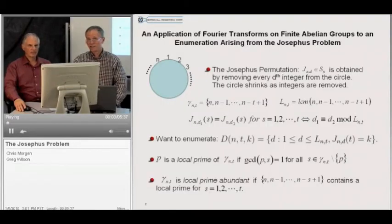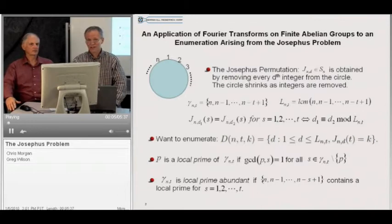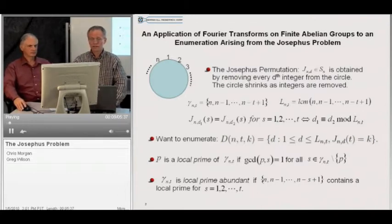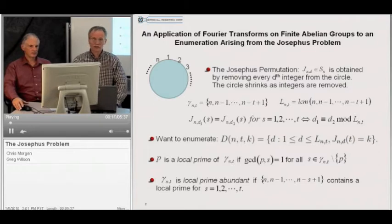Hello, my name is Greg Wilson, and this is my longtime friend, Chris Morgan. Our paper is entitled, An Application of Fourier Transforms on Finite Abelian Groups to an Enumeration Arising from the Josephus Problem, published in the Journal of Number Theory.